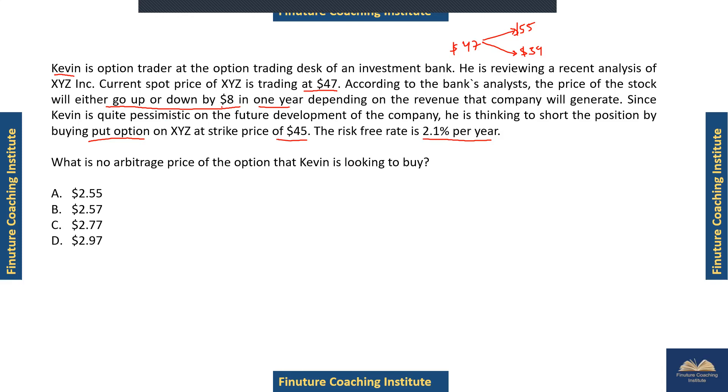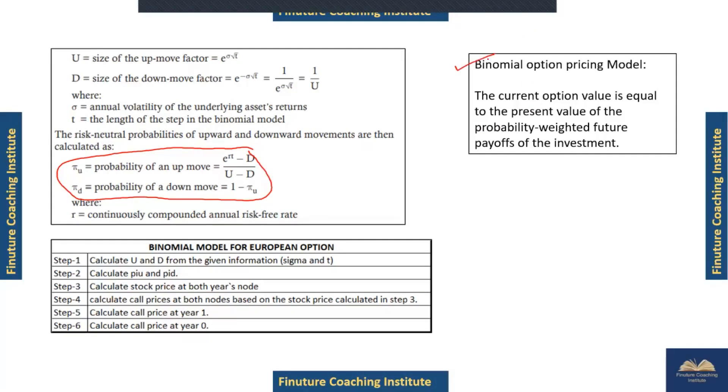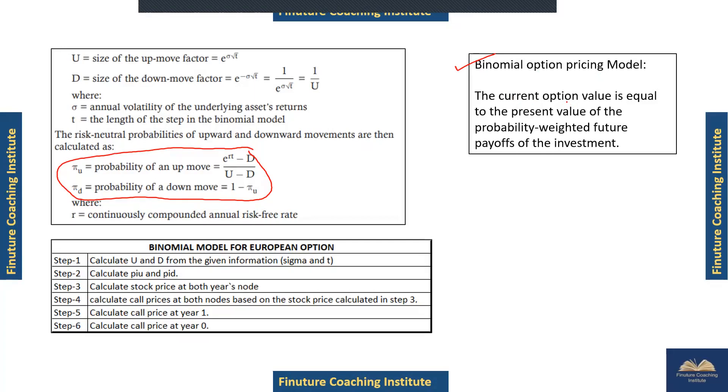Here are the formulas you can use. This is the complete process to derive option price using the binomial option pricing model, but for this numerical we'll just use the probability formula. The fundamental of binomial option pricing is that the current option value is the present value of probability-weighted future payoffs, so we need the probability of up move and down move.